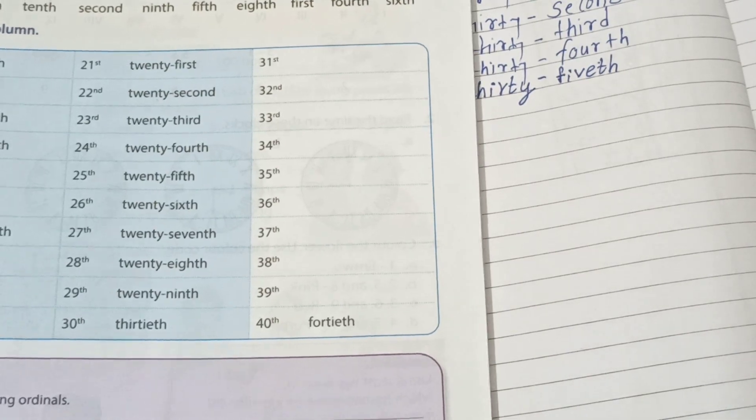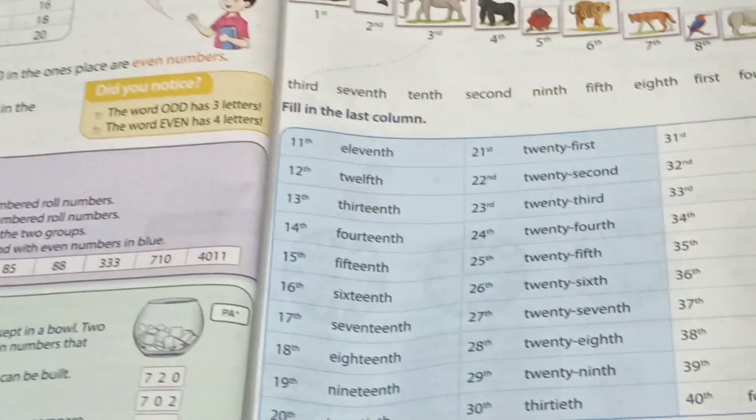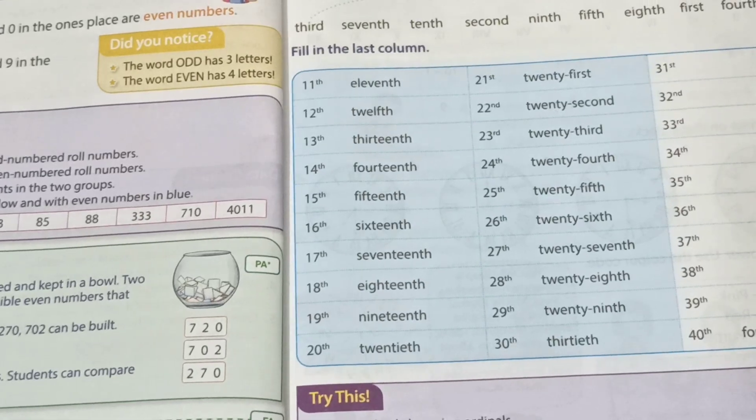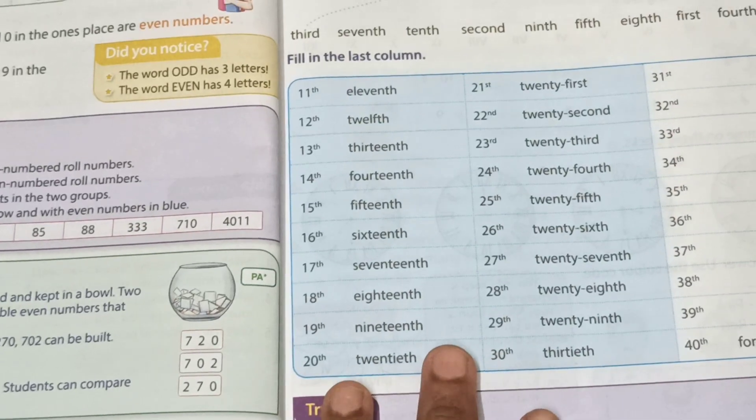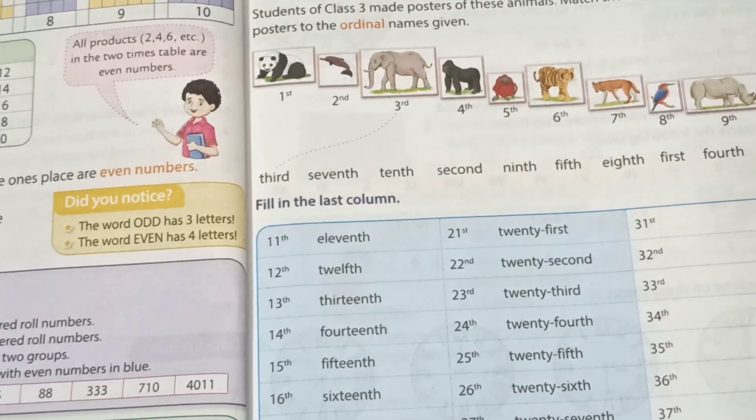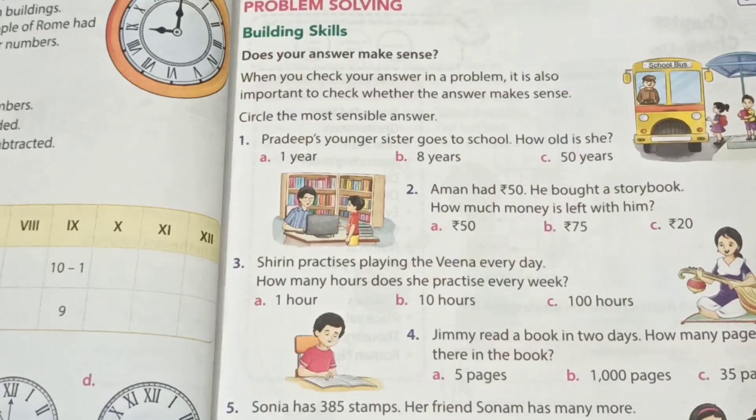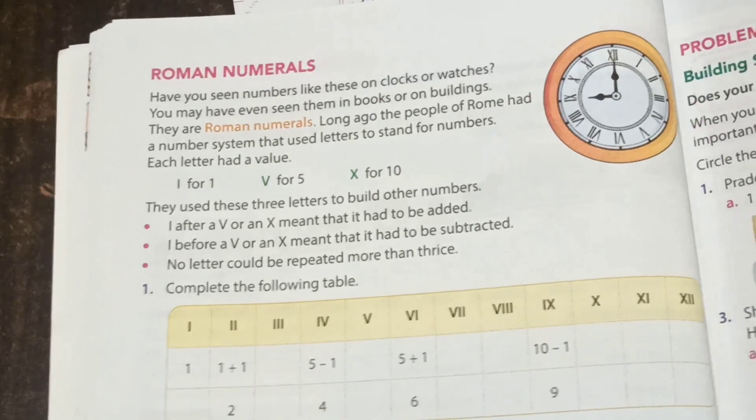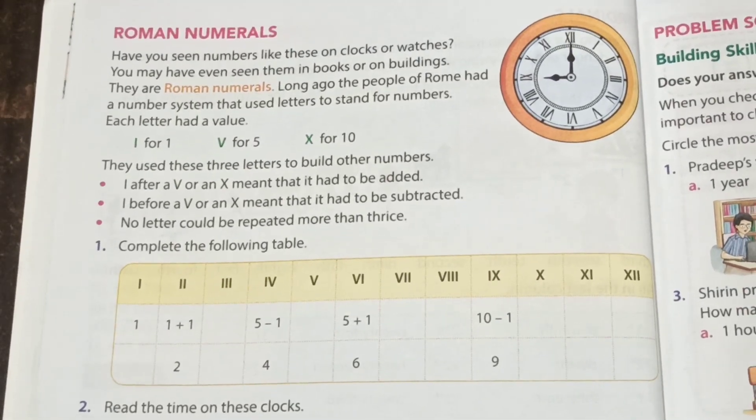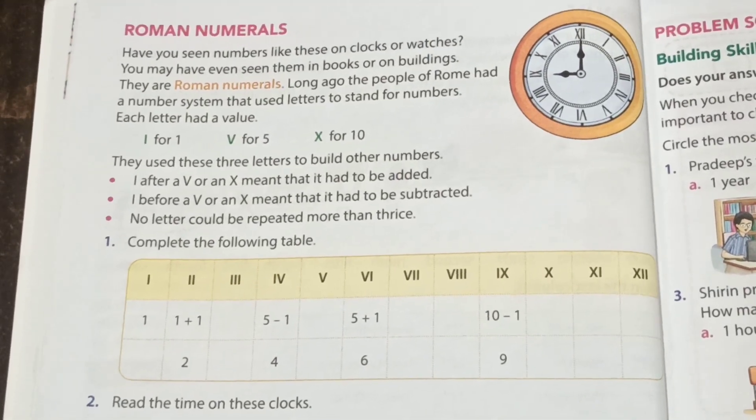All numbers are called ordinal numbers. I hope all of you enjoyed this lecture and better understood ordinal numbers. Kids, in next mathematics lecture, we start Roman numerals. Till then, bye-bye kids.